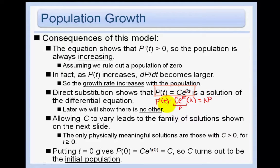So dp/dt equals kp, and p = ce^(kt) is one particular solution of it, and we're going to show there is no other. Allowing c to vary leads to the family of solutions shown on the next slide, and the only physically meaningful solutions are those with c greater than 0, for t greater than or equal to 0, because we want p'(t) to be greater than 0.